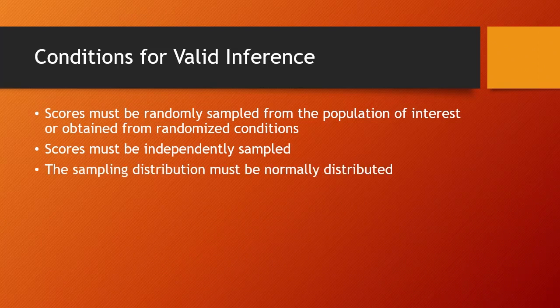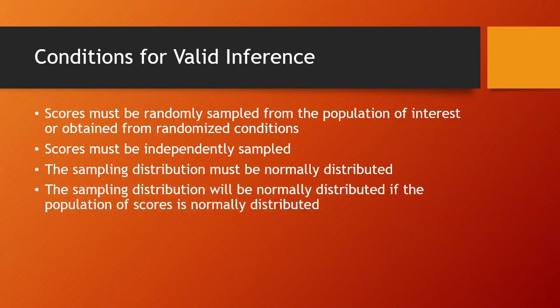The sampling distribution must be normally distributed. There are two reasons for the sampling distribution being normally distributed. First, the sampling distribution will be normally distributed if the original population of scores is normally distributed. For example, if the scores on the GRE exam are normally distributed, as they are, then the sampling distribution of the mean will be normally distributed and this condition for valid inference will be met.